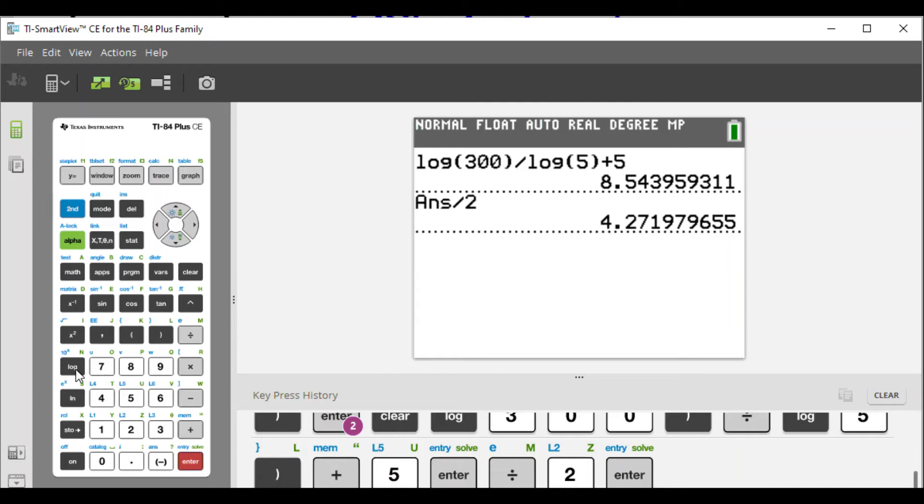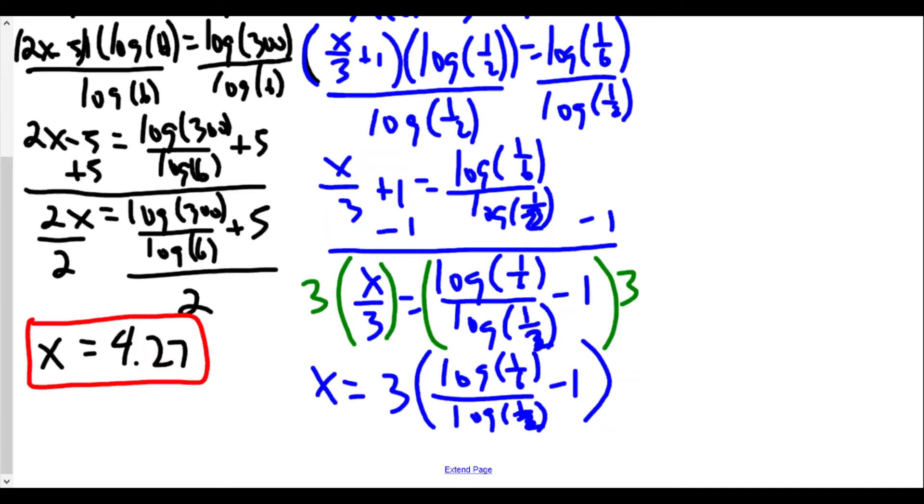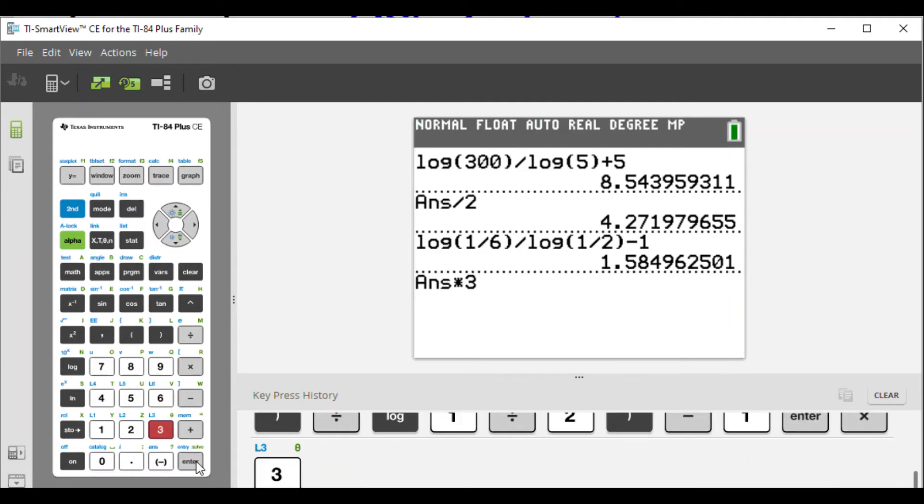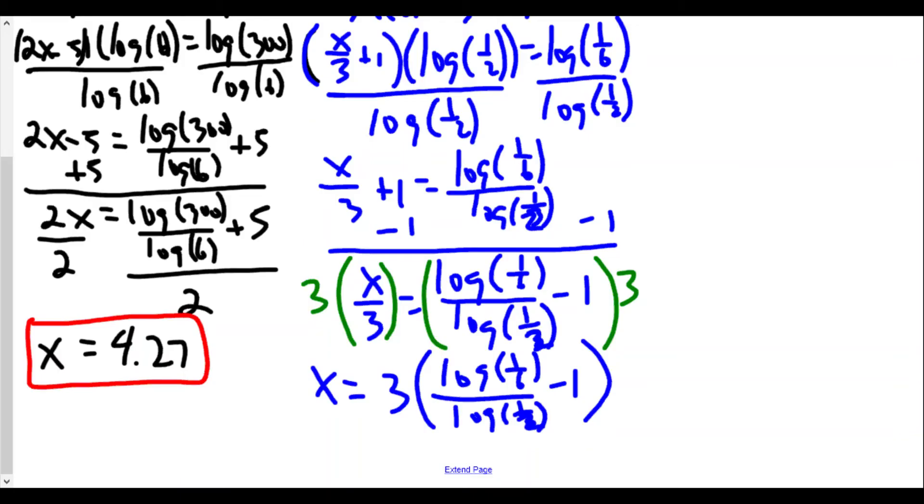So we have log of 1/6, one divided by six, divided by log of 1/2, one over two, close parenthesis. And then we're going to subtract by one, minus one. And so we get, in this case, 1.584962501. But we're not finished yet. We're supposed to take this answer and multiply it by 3. So times 3. And we get, to the nearest hundredth, 4.75, because the four here is not enough to bring up next. So the answer for this one is 4.75. So x is equal to 4.75.